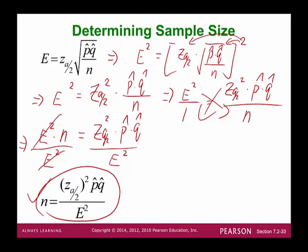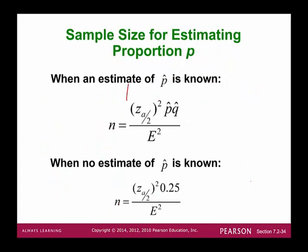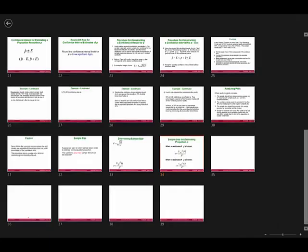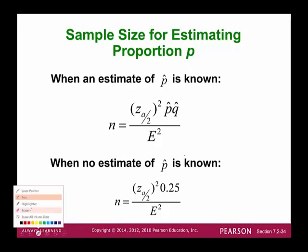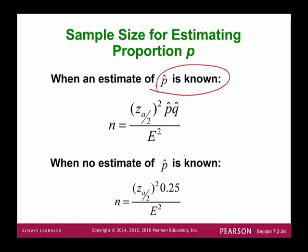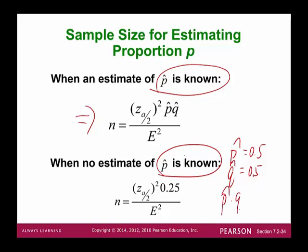All these formulas are summarized in the formula sheet. The sample size formula for estimating proportion P: n = [z alpha over 2]² × p-hat × q-hat / E². When p-hat is known or can be calculated, use this formula. If p-hat is unknown, use n = [z alpha over 2]² × 0.25 / E², because when p-hat is unknown, we set p-hat = 0.5 and q-hat = 0.5.